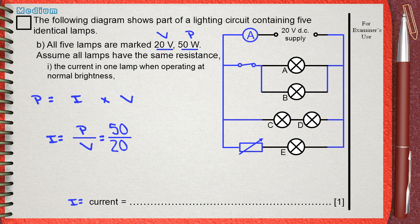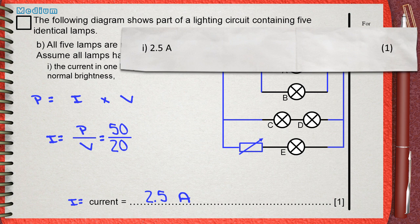Power is 50, voltage is 20. Dividing them together will give 2.5 and do not forget the unit of current, which is amperes. The mark scheme awards 1 mark for 2.5 Amperes. This is the first question. We got 1 mark.